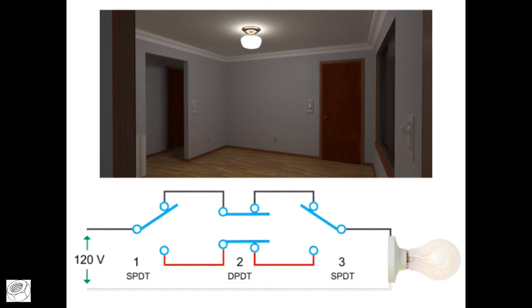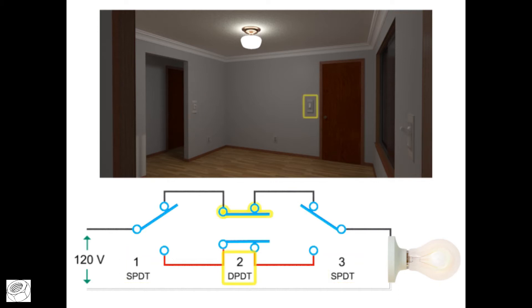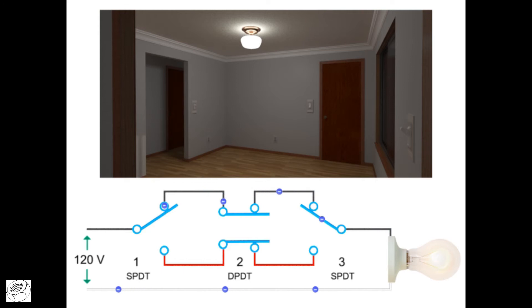If switch one and three are in the up position and the position of switch two connects the same colored wires in the circuit, the current passes through the black wire and lights the bulb.